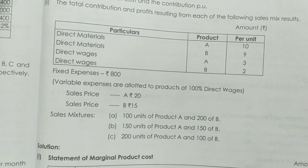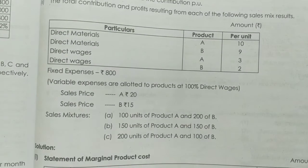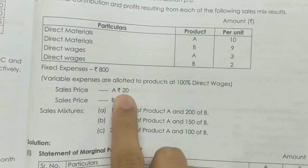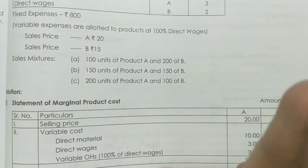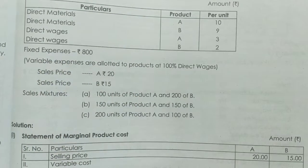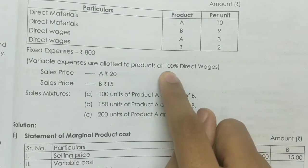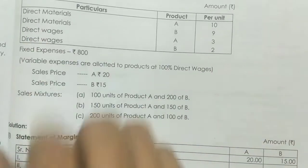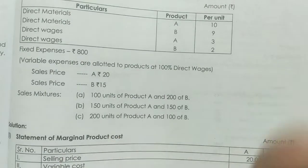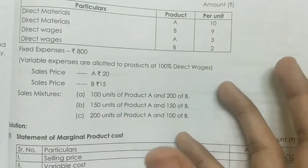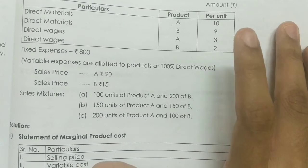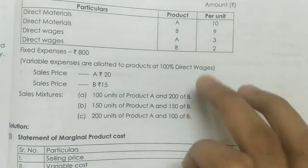We have direct material and direct wages. The selling price is $25 for one product and $15 for the other. The variable cost includes direct material, direct wages. Variable expenses are allocated to products at 100% of direct wages.